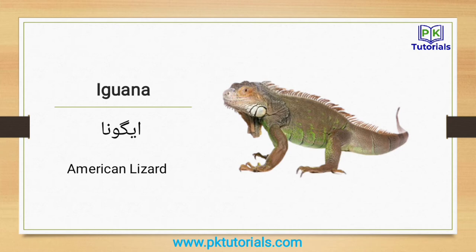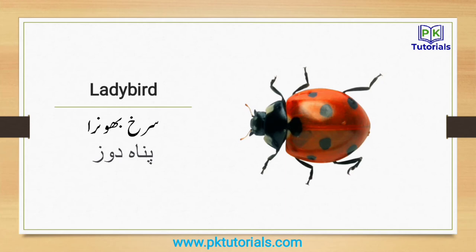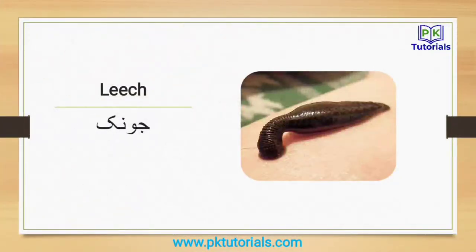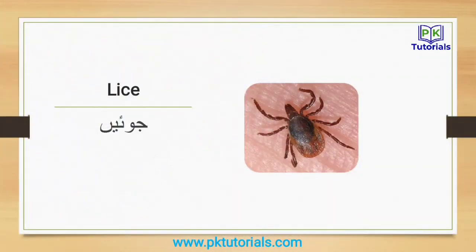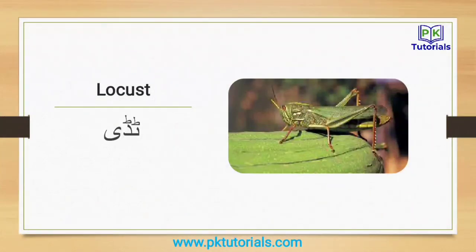Iguana is also called American chappli, which is slightly larger than a normal lizard. Ladybird: surh bonra panah dooz. Leech: jonk. Lice: joint. Lizard: chappli. Locust: teddy.